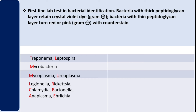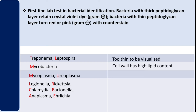These organisms are too thin to be visualized, which is why we can't visualize them using Gram staining. For example, Treponema and Leptospira are too thin to be visualized using the Gram staining method.